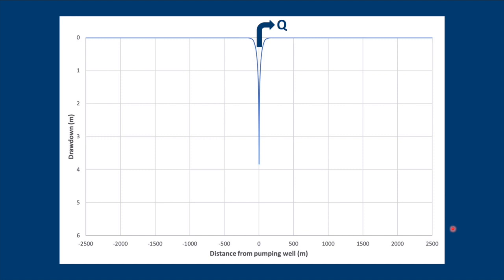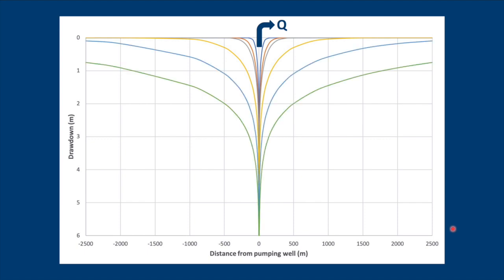Here we have a pumping well pumping at a rate Q and you see that over time the cone of depression propagates both downwards and outwards. If we have an observation well at a fixed distance from our pumping well and we record the drawdown at various points in time, we can plot it like so. The drawdown on the y-axis, time on the x-axis, and then you'll see that as time progresses drawdown increases. This is what's called the time-drawdown method.